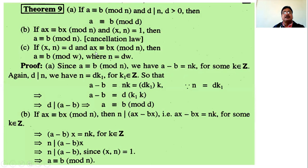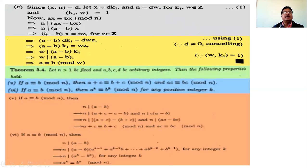Also given: ax is congruent to bx modulo n, which implies n divides ax minus bx, and then n divides (a minus b) times x. So a minus b times x is expressed in the form n into some integer z. Substitute x as dk1 and n as dw. Cancel d, giving (a minus b) times k1 equals w times z.